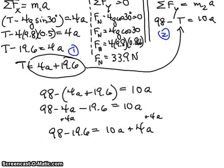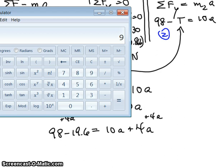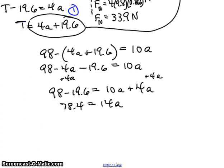I get 98 minus 19.6 equals 10a plus 4a. And let's see, 98 minus 19.6 is 78.4. So that is 78.4 equals 14a. And you can see what's happening here now.